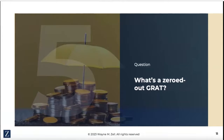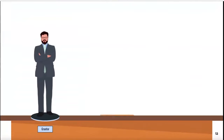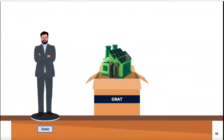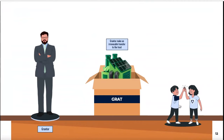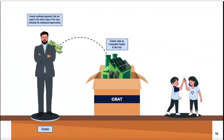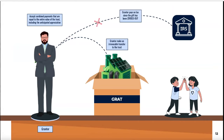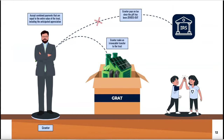What's a zeroed-out GRAT? When you contribute assets to a GRAT, you're making a gift that may be subject to gift tax or can reduce your lifetime gift tax exemption. The value of the gift equals the fair market value of the assets contributed to the GRAT minus the value of the annuity payments that are due over the GRAT term. If the annuity is large enough, you can completely zero out the gift. This means that your GRAT beneficiary can receive the remaining trust assets free of estate and gift tax. In a zeroed-out GRAT, the annuity has to equal or exceed the fair market value of the assets you're putting into the GRAT.